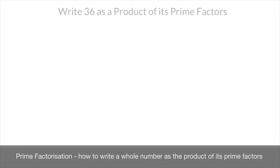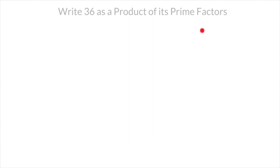In this tutorial we learn how to write a whole number as a product of its prime factors, and we're going to do so by working through a couple of examples. The first is shown here — we need to write 36 as a product of its prime factors.